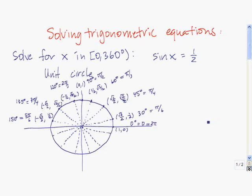Remember that the sine of the angle is equal to the y-coordinate, so looking for where sine of x equals 1 half is looking for where the y-coordinate on the unit circle is 1 half. We see that here is one spot where the y-coordinate is equal to 1 half, so that means that 30 degrees is one of our solutions.